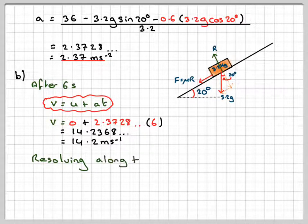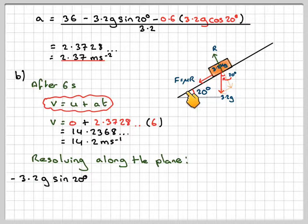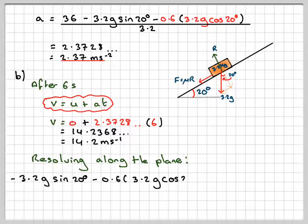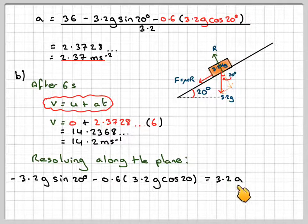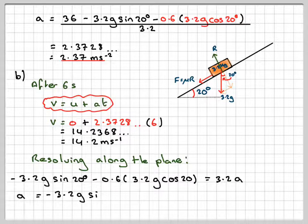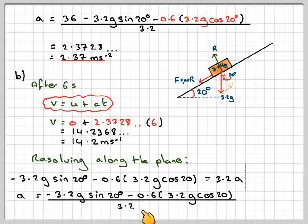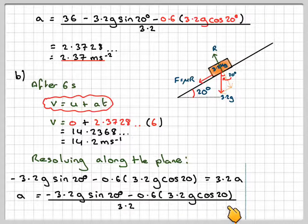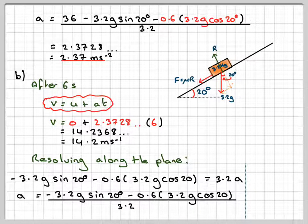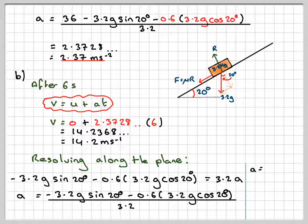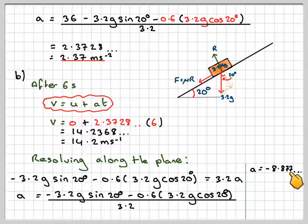Resolving along the plane, this time we're going to have minus 3.2g sin 20, this force here, minus mu R, so minus 0.6 times 3.2g cos 20, but nothing going that way, is equal to 3.2a. Rearranging, A will become minus 3.2g sin 20 minus 0.6 times 3.2g cos 20. And that will give me that A is minus 8.877.